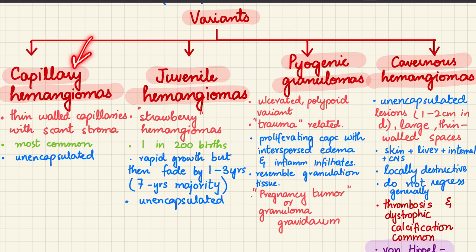Capillary hemangiomas are thin-walled capillaries with scant stroma and are the most common unencapsulated tumors. Juvenile hemangiomas, present at birth at a rate of 1 in 200 births, are also known as strawberry hemangiomas. They grow rapidly but fade by one to three years of life; in the majority of cases they will fade by seven years and are also unencapsulated.